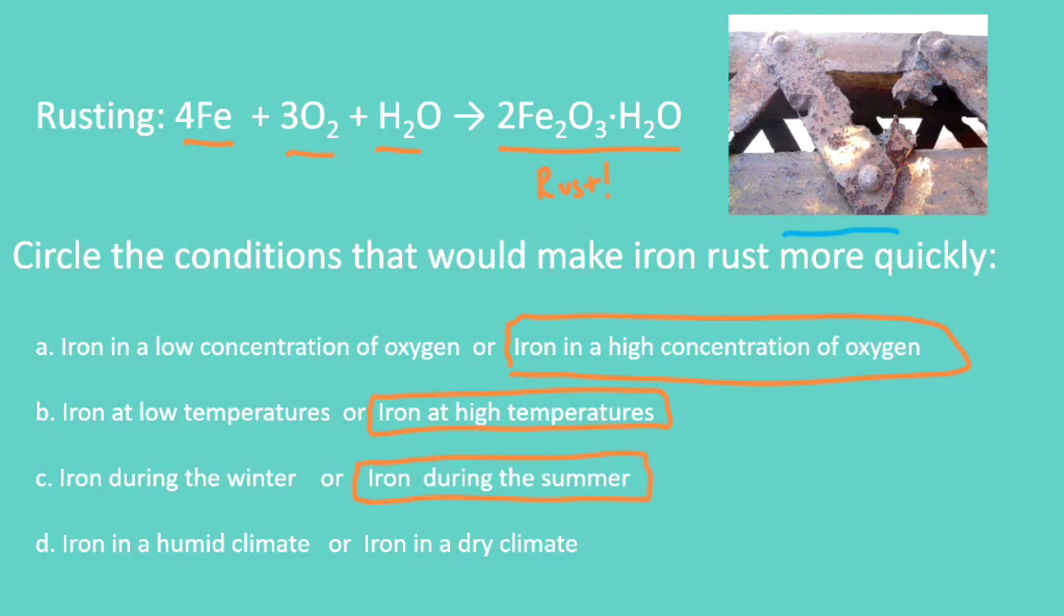Lastly, does iron in a humid climate rust more quickly or iron in a dry climate? Well remember, humid means there's moisture in the air, and that is one of our reactants, the water. And so what that means then is that when I have a more humid climate, I have more of that reactant around, more water around, and it's going to make it rust faster.